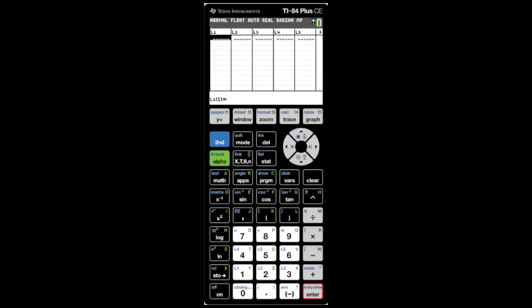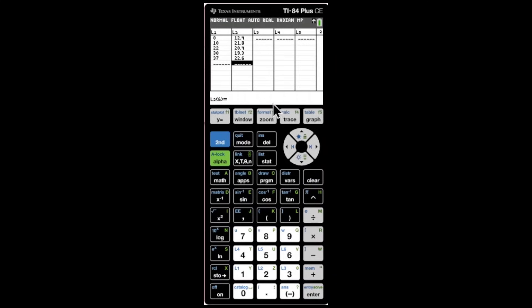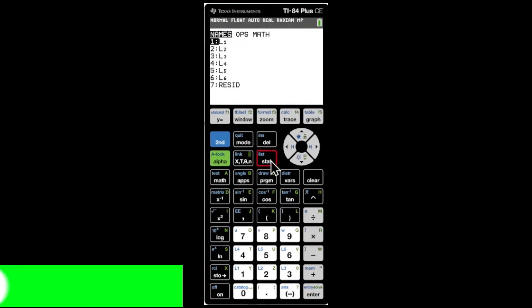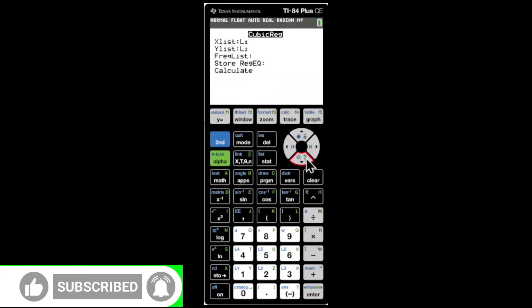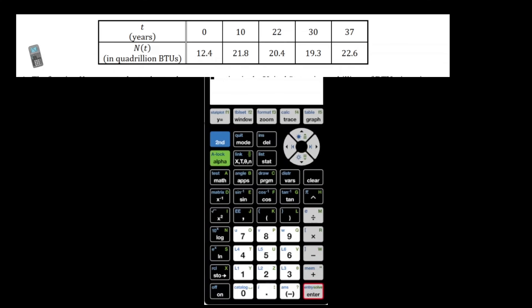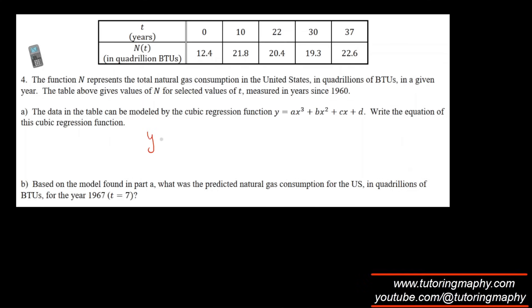This question is also cubic regression. Let's type in the numbers. The first one is zero, then we have 10. Once we do that, this is how it looks. We click on STAT again, calculator. This is a cubic, so we go in the cubic, enter, calculate, and enter again. This is the model.